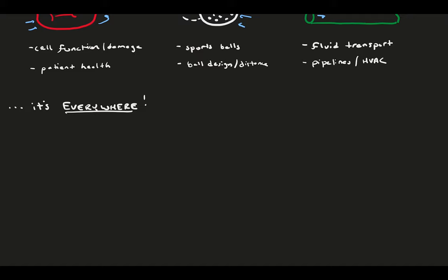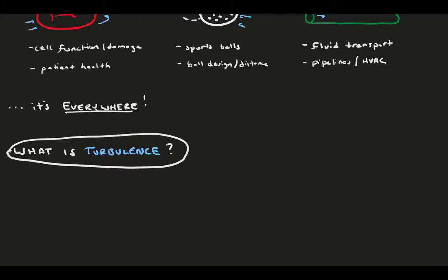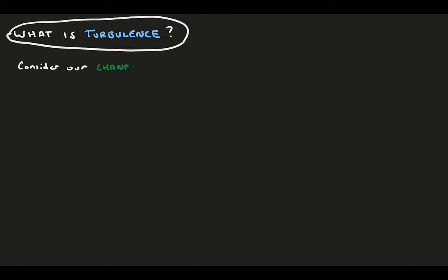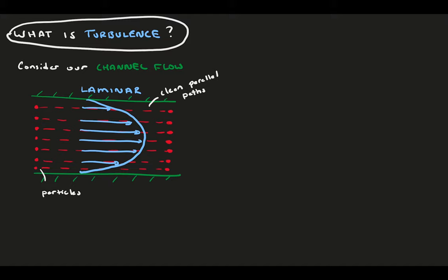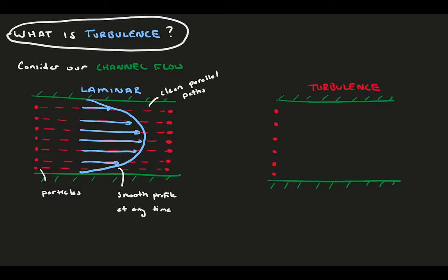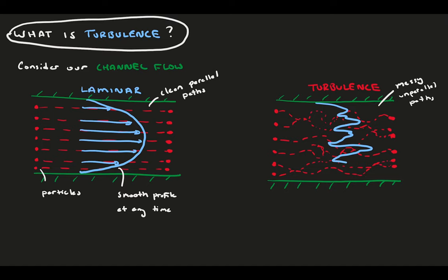Now that we know we can't escape turbulence, we ask: what is it? What are its main characteristics and what does it look like? Let's consider channel flow — flow between two flat plates — as a reference. In laminar flow, particle tracers follow parallel and organized pathlines, and the velocity profile is smooth and parabolic. Turbulence in channel flow is quite different. If we put particle tracers in turbulent flow, the pathlines would be incredibly messy, unparalleled, and disorganized. An instantaneous velocity profile would look extremely jagged and unsteady — a complete mess with only a hint of organized shape.